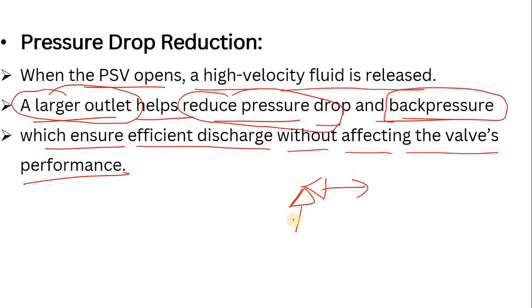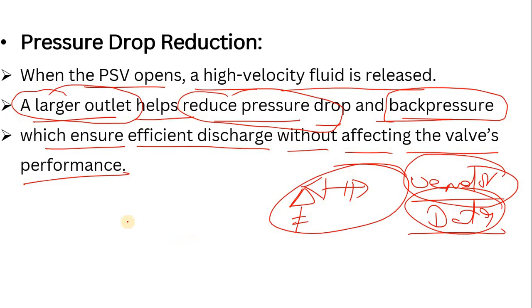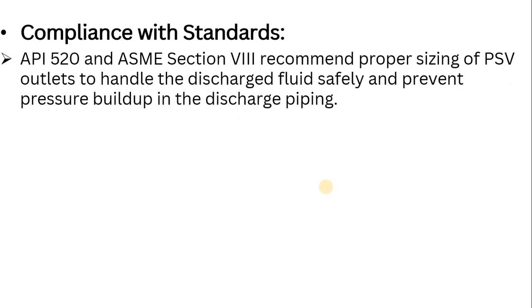We must also ensure that when selecting the PSV and doing the lateral sizing for inlet and outlet, we check the vendor data. If you are selecting a vendor for the PSV, you must consider the flow rate that the vendor is selecting when doing your calculations. If the flow rate you calculated and the vendor's flow rate are different, then your calculation could be affected.